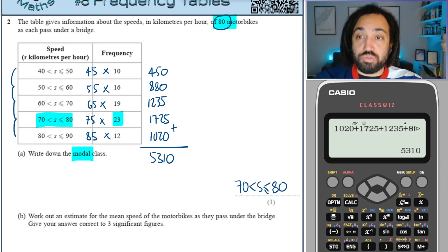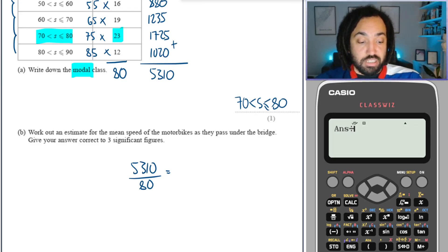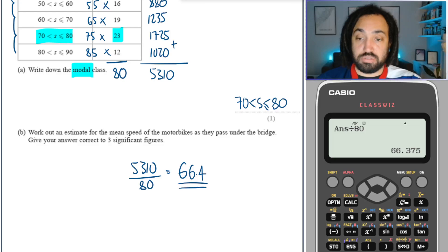We have to divide by the total frequency which is given up here as 80. If it wasn't given then we would add up this column. So the overall mean is this divided by that, and it's asked to three significant figures so that would be 66.4. Job done.